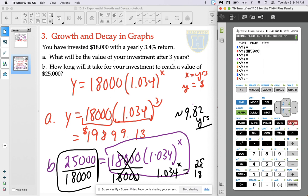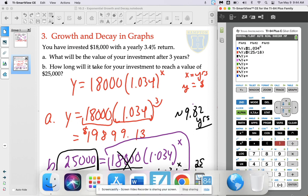We're going to get rid of these two functions and we're instead going to graph the much simpler 1.034 to the power of X and the horizontal line at 25 over 18.